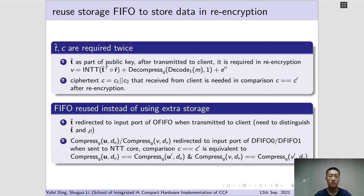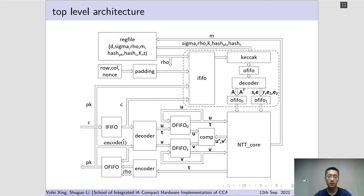The Fujisaki Okamoto transform contains re-encryption and comparison procedure in server side. Noticing the polynomial vector T in public key is required in re-encryption, and the ciphertext C1 and C2 are both required in comparison after they participate in decryption process. This should not be thrown away before the transform is conducted. Actually, there is no need to resort to extra storage resource. For polynomial vector T, it is redirected to input port of O-FIFO when transmitted to client. For ciphertext C1 and C2, they are redirected to input port of D-FIFO respectively, when they are fetched by NTT core to take part in decryption process.